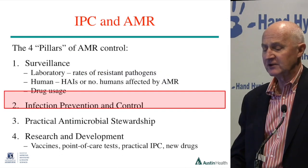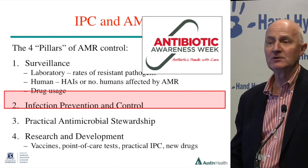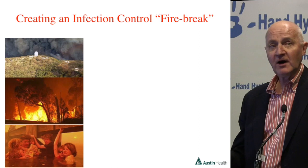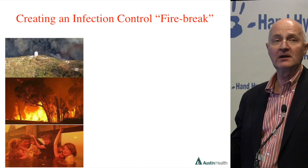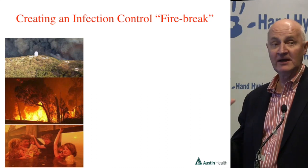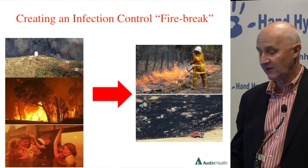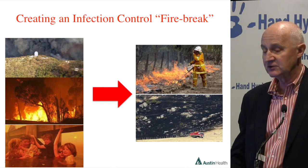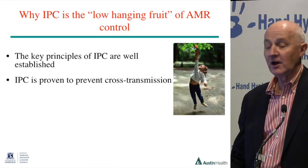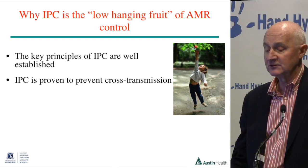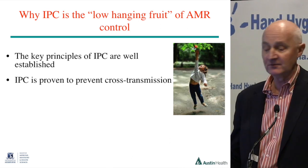If we now come to infection prevention and control, I would argue this is probably the most immediate thing we can do about AMR control. The bushfire of antibiotic resistance is running fast — yes, we need new fire trucks and helicopters to put out the flames, that is new antibiotics, but that's five or ten years away. In the meantime, we need to cut a firebreak, and that firebreak is infection prevention and control. The key principles of IPC are actually very well established — it's proven to prevent cross-resistance transmission, just ask Florence Nightingale, who spatially separated infected patients.